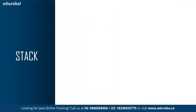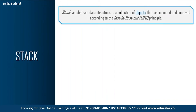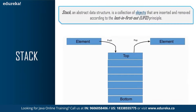Based on these properties, linear data structures are divided into stack, queue, and linked list. A stack is an abstract data structure — a collection of objects inserted and removed according to the Last In First Out (LIFO) principle. Objects can be inserted into a stack at any time, but only the most recently inserted object — the top element — can be removed. This is the bottom element and this is the top element.